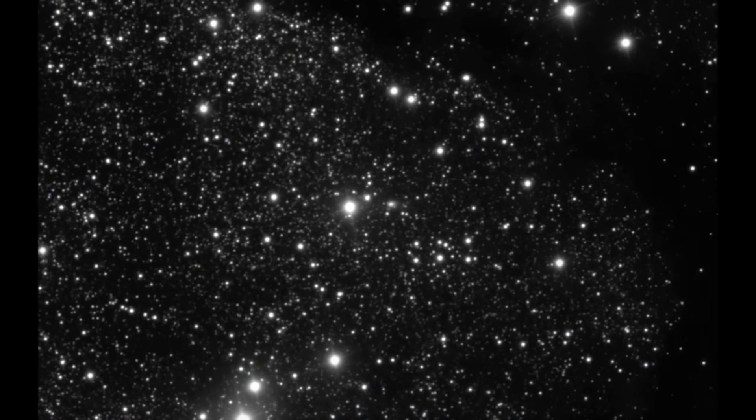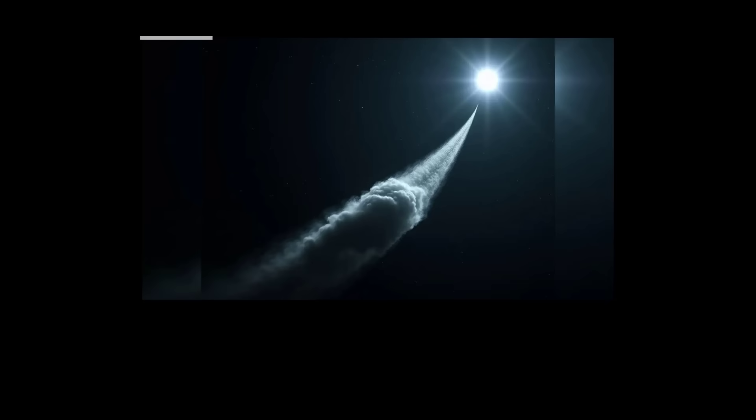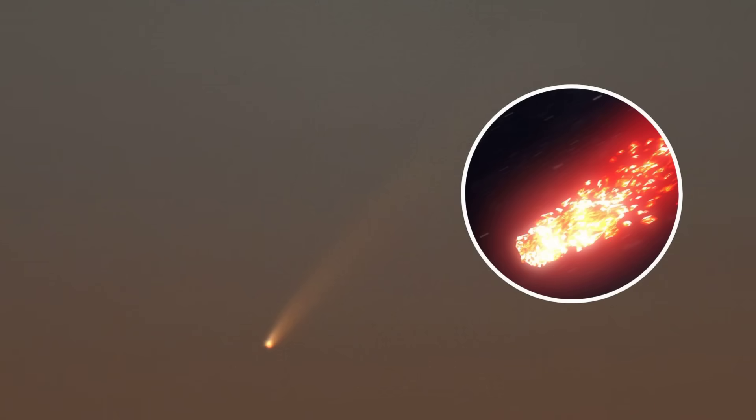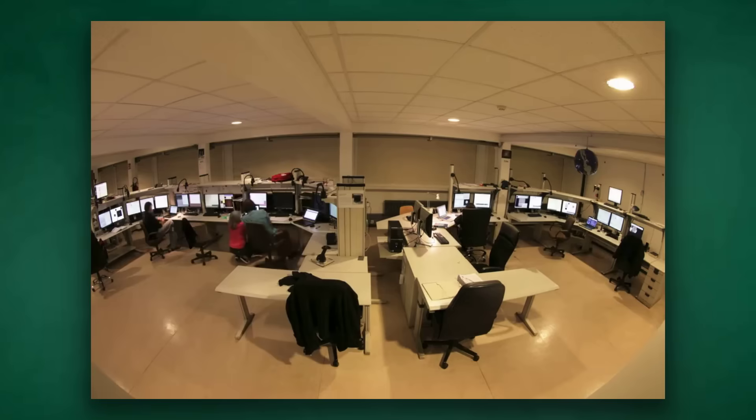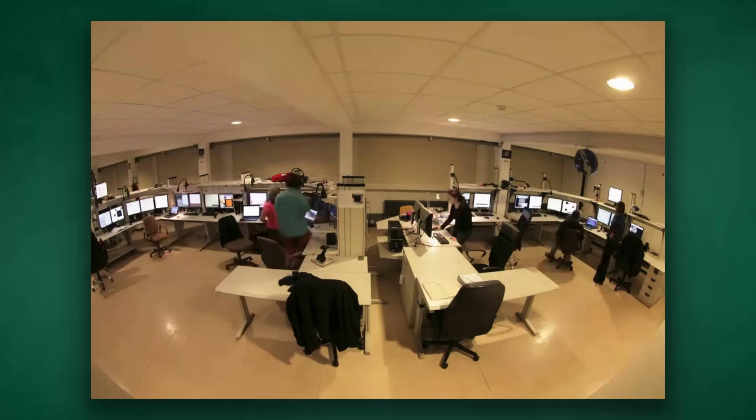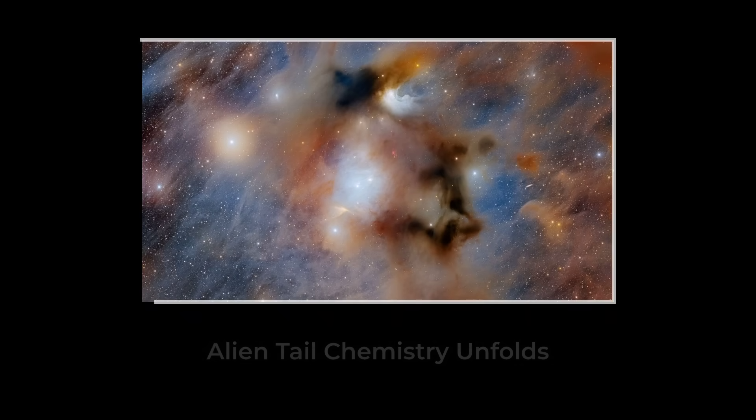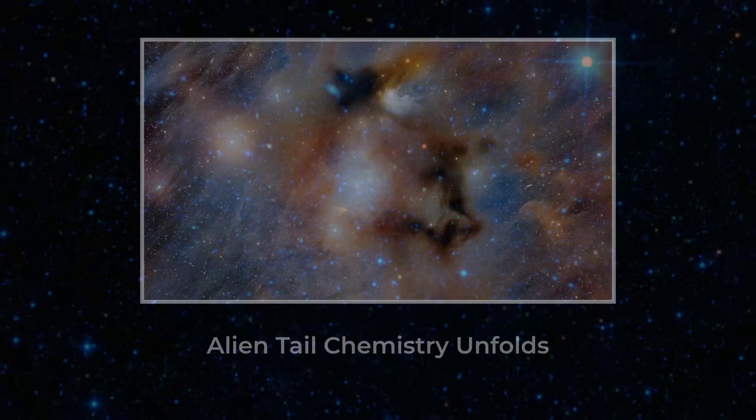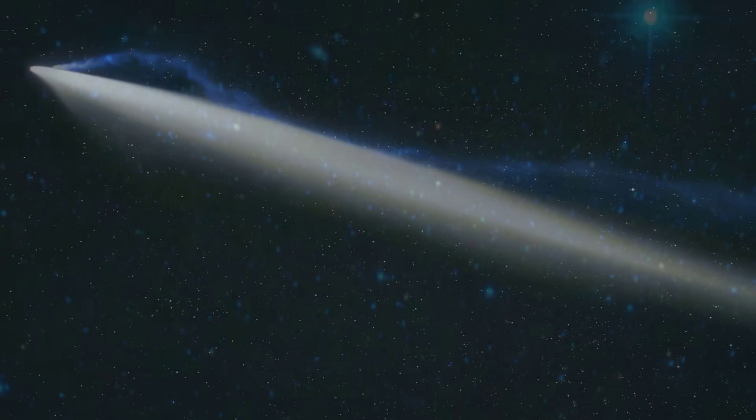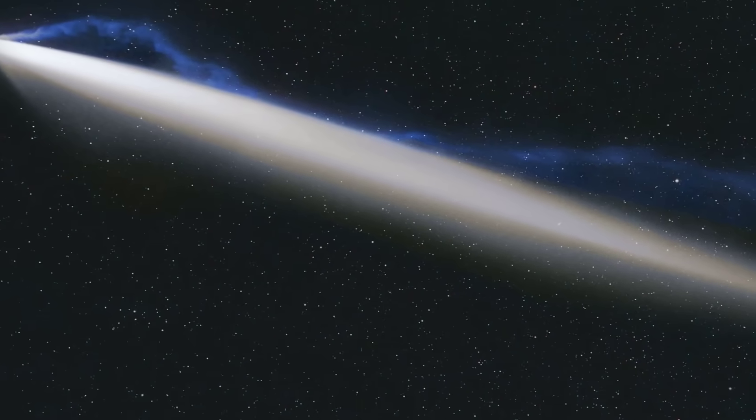This is where the story gets weird. The tail's brightness isn't steady. It pulses, flickers, even seems to twist. That could mean jets erupting from the surface, or maybe chunks breaking off and vaporizing in the sun's heat. The numbers from Gemini South don't quite add up to any known solar system recipe. Some models predict tails like this for objects born in the outer reaches of other stars, where sunlight is a distant rumor and chemistry gets strange. But nothing in the data screams normal.